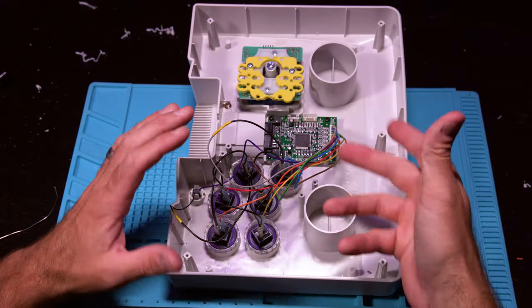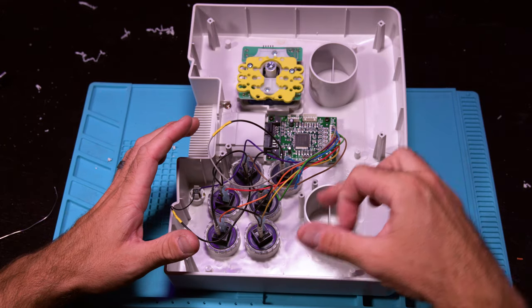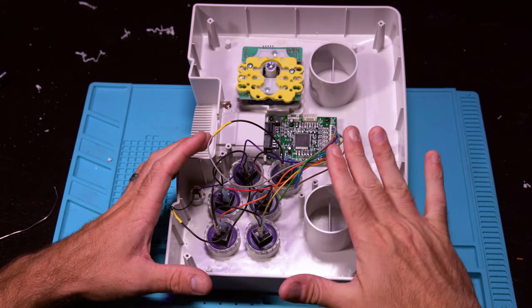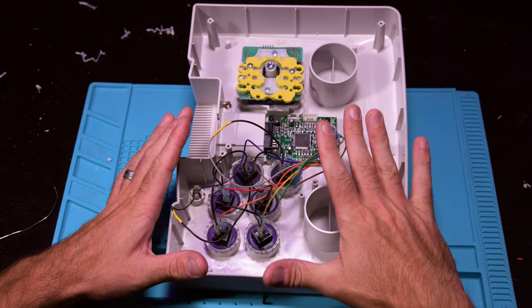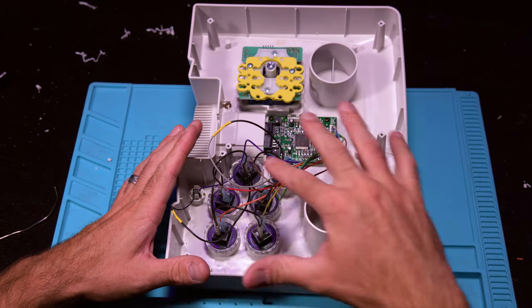Now that we have the buttons connected and the harness connected, we can start cleaning up some of these wires. Maybe add a few zip ties and tuck those wires out of the way so that when we add that bottom panel, nothing gets pinched.